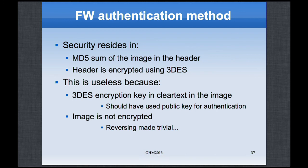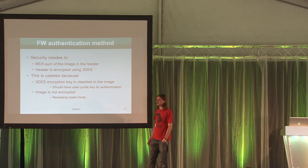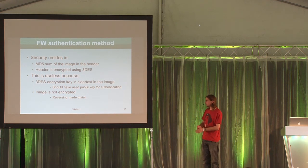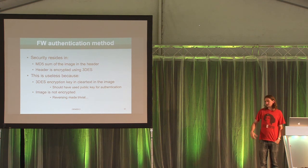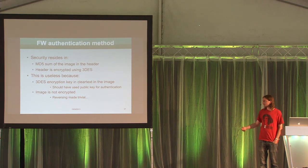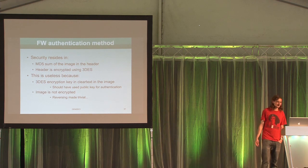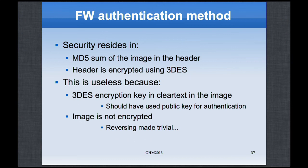Now that we have the keys, it's trivial to generate a rogue update: make the same header with the MD5 checksum of the image we want to flash, encode it with Triple DES, print the size as a big-endian short integer, and concatenate the gzip image — we have a valid firmware. To summarize: the security of this firmware update relies on checking the MD5 checksum of an image in a header that is symmetrically encrypted with Triple DES — useless because we can find the key in the binary. The image itself is not even encrypted. Proper authentication should use public key cryptography: only the certificate would be on the image, and the public key is useless for reconstructing a valid firmware. The reversing was made trivial by IDA and all the symbols.